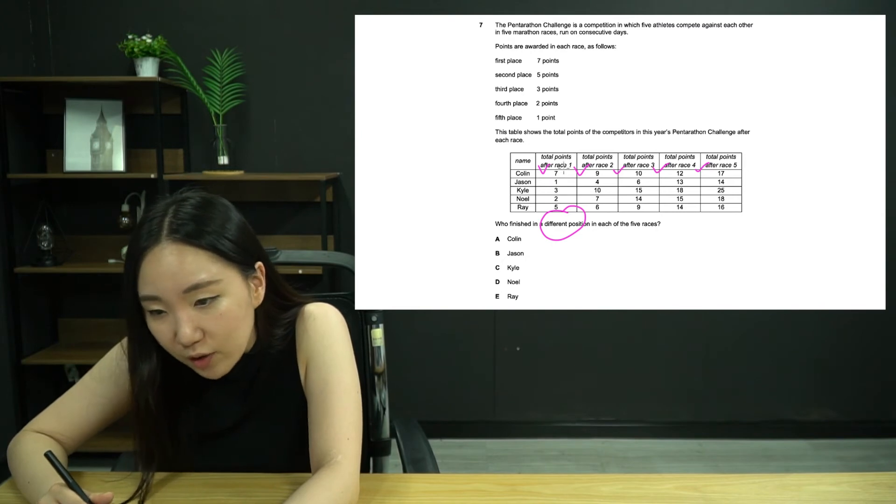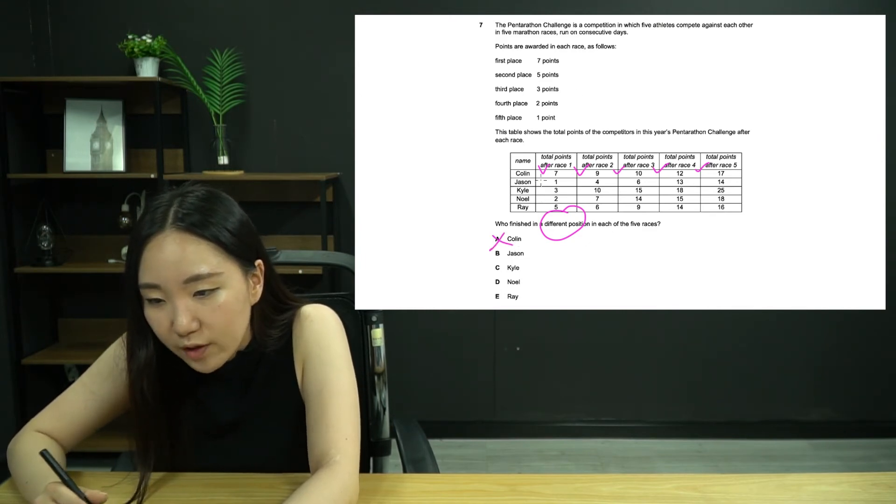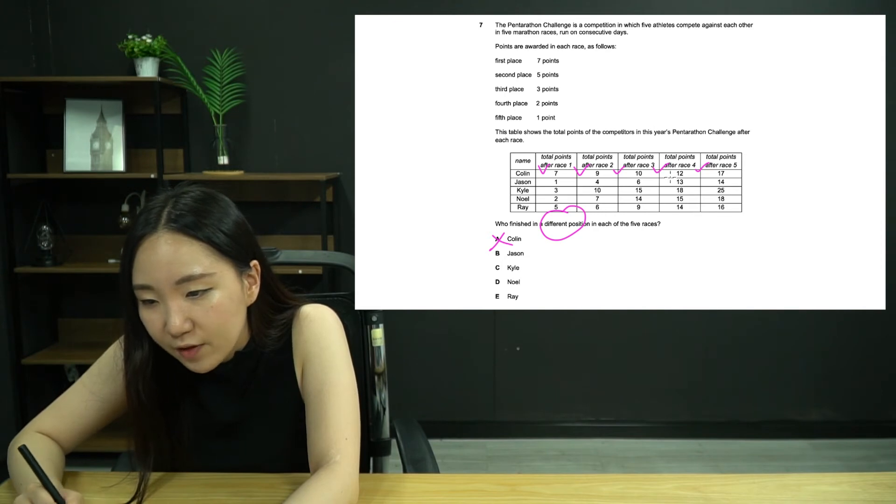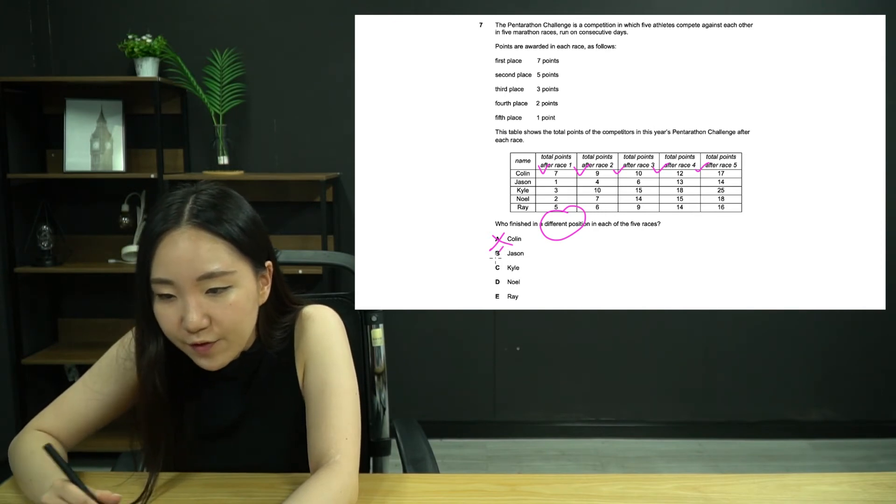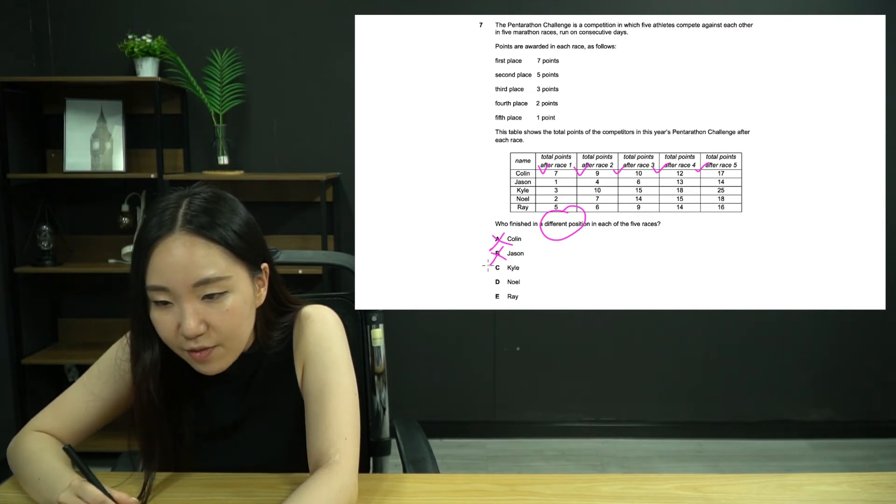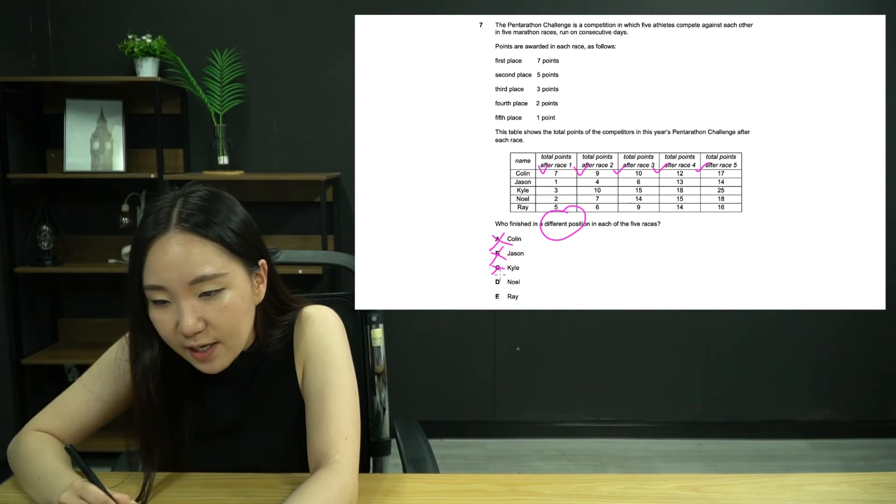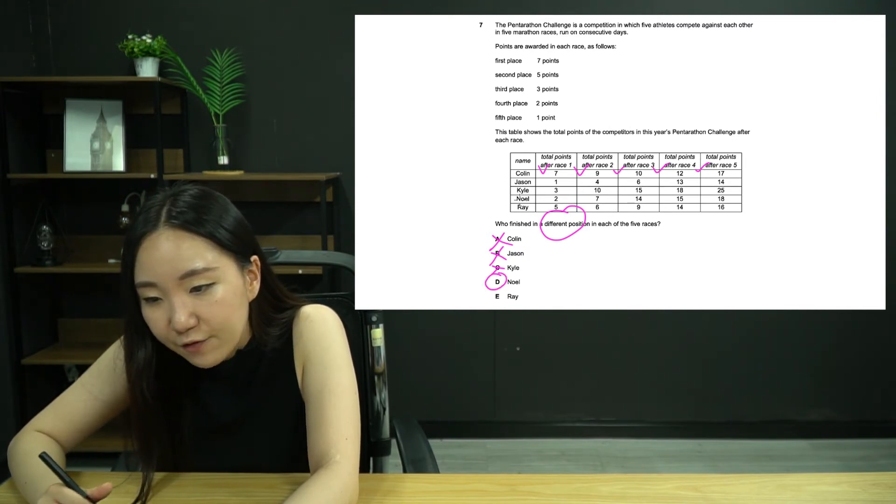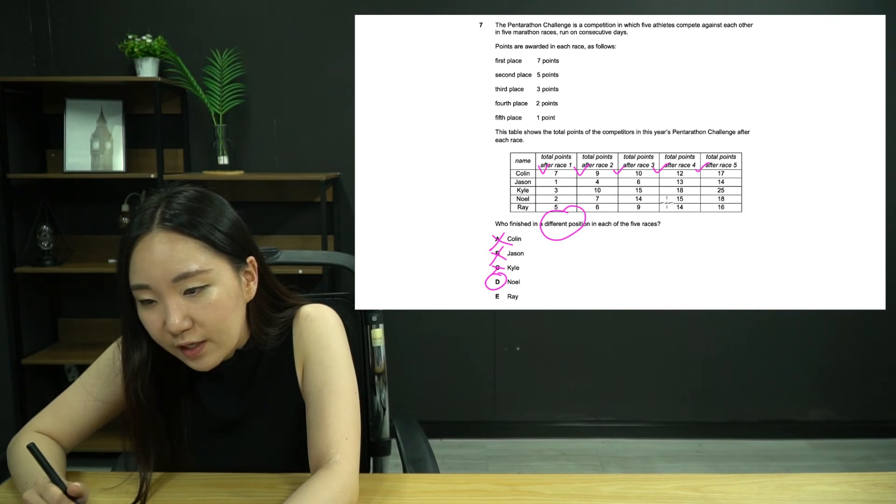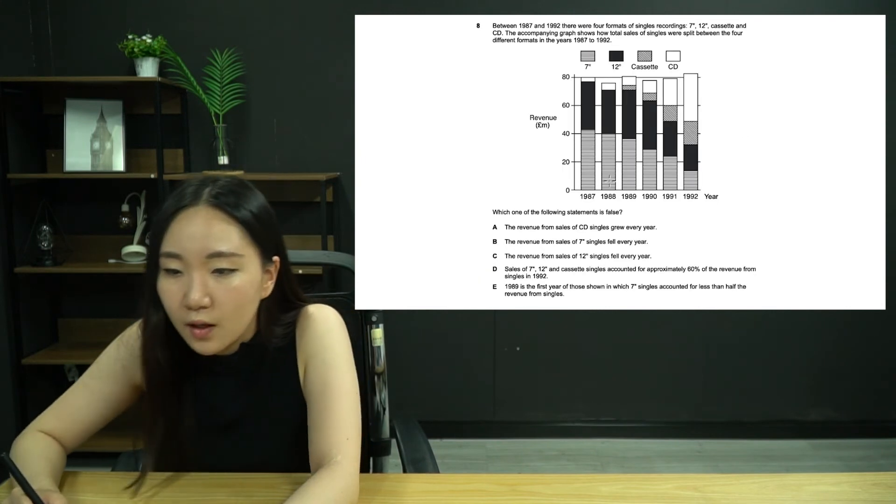We need to make sure that the gap is different every time to ensure they came in a different place every time. Colin: seven plus seven plus two plus one plus two. That's a repeat, he came fourth twice. Jason: one, three, two, seven, one. No, he came fifth twice. Kyle: three, seven, five, three. Nope, he came third twice. Noel: two, five, seven, one, three. Yes, he came different every time. And Ray: five, one, three, five. So no, he came second twice.